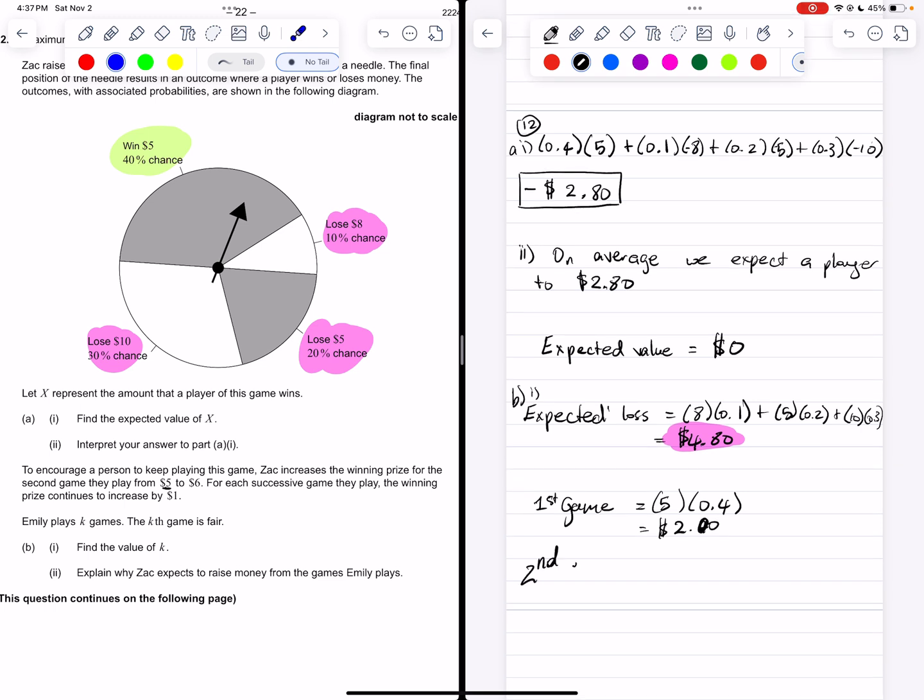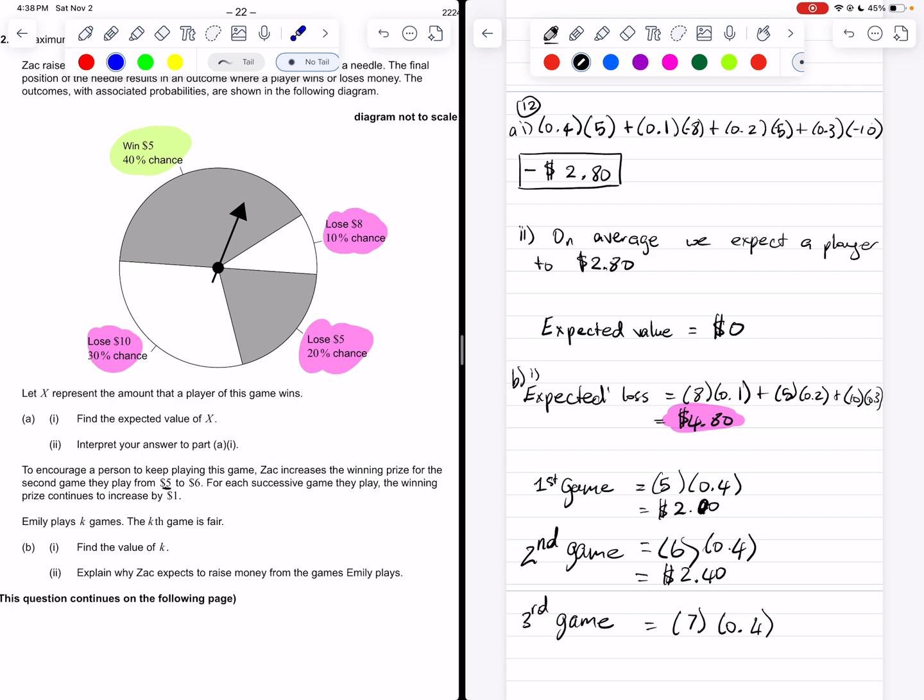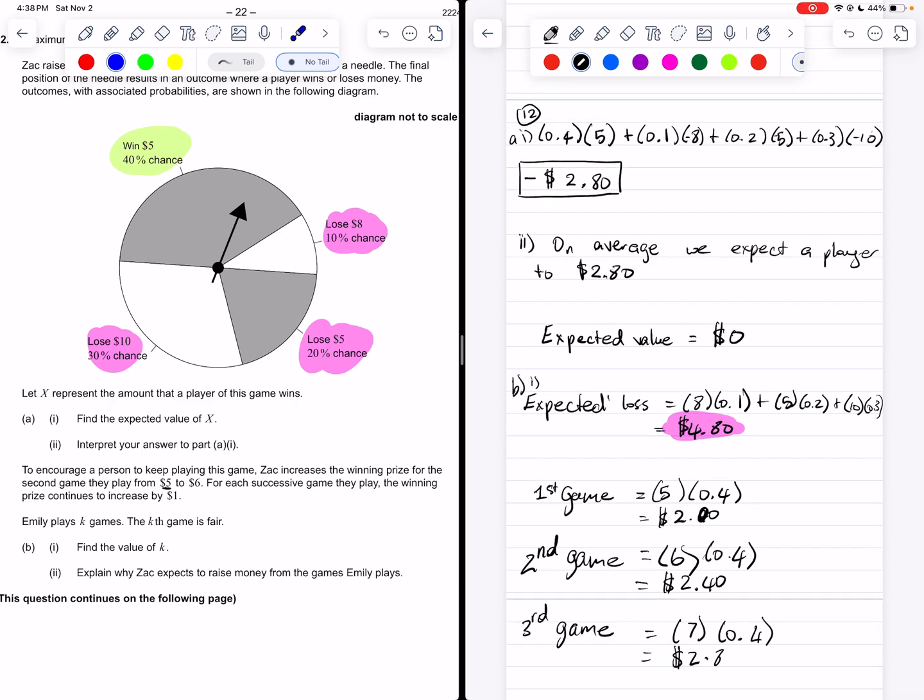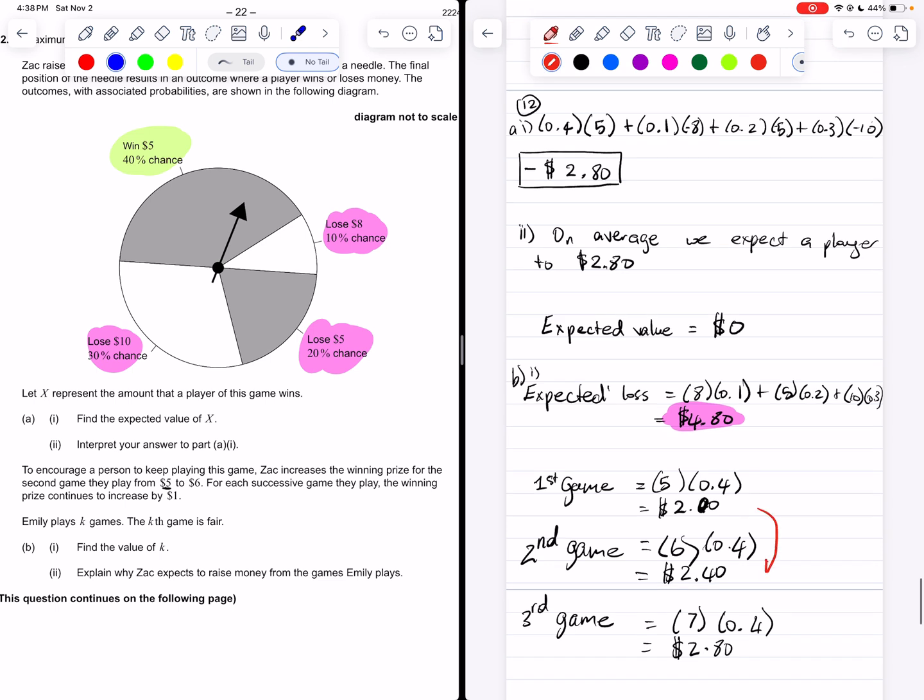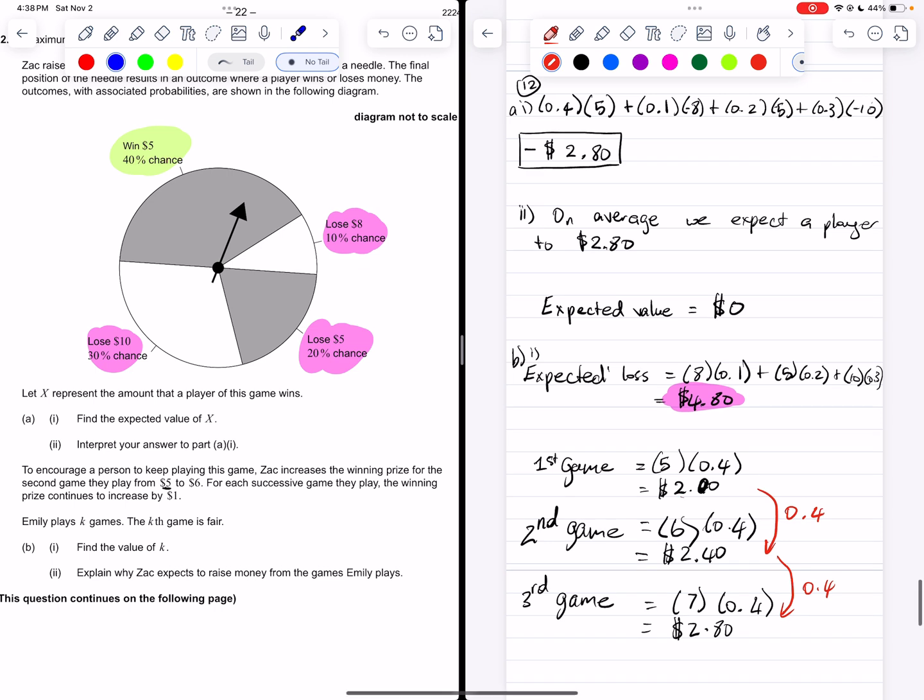So what happens in the second game? In the second game, we up the amount that is being given as that price, and we multiply it by 0.4, and we get $2.40. And in the third game, and we could keep doing this, but it's easier and quicker if after a while we see a trend. So that third game, 7 times 0.4, and we get $2.80. So now we have enough information to see that from game to game, the winning is increasing by 0.4. We know that this is the starting amount. We know that this is the amount that's jumping by each time, so that is our common difference. And here we have an arithmetic sequence.